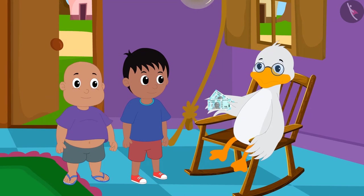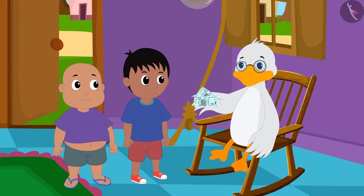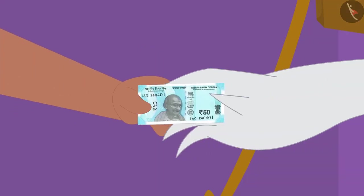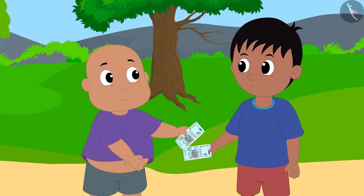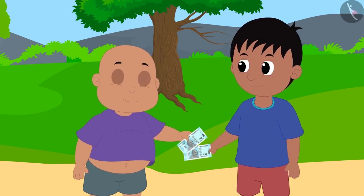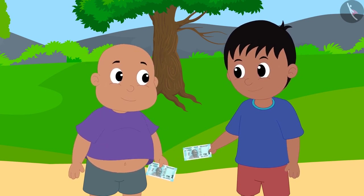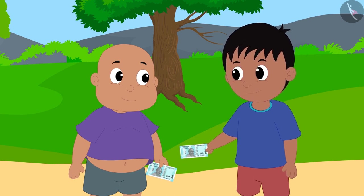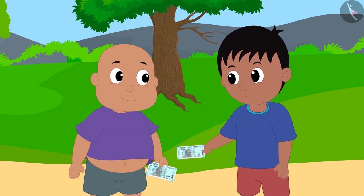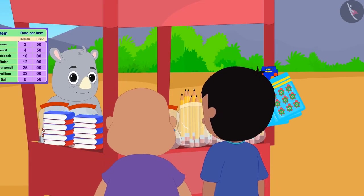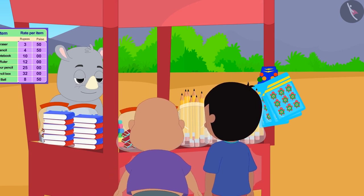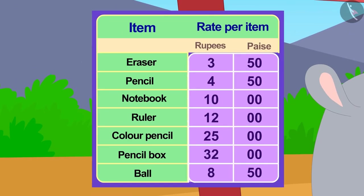Uncle gave Raju and Bablu 50-50 rupees for helping him get some goods from the market. Now there is a bet between Raju and Bablu that whoever buys the most number of items from his 50 rupees will be the winner. Now Raju and Bablu reached Gaggu's shop.